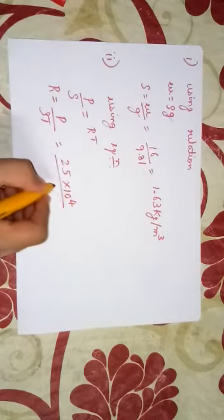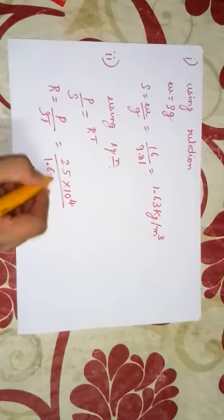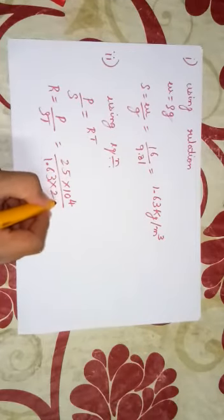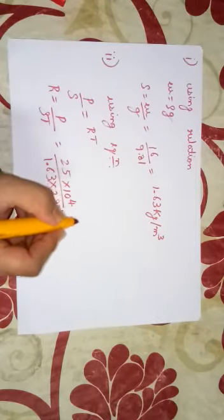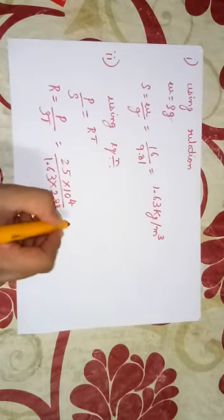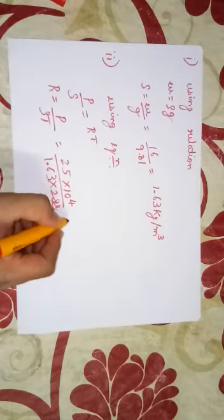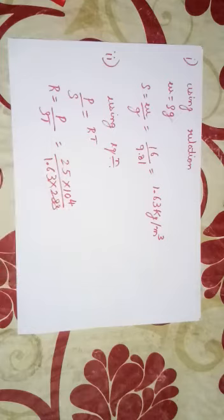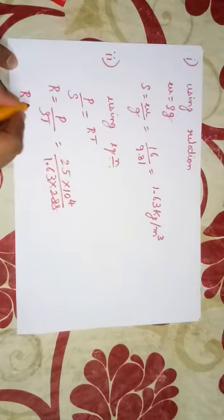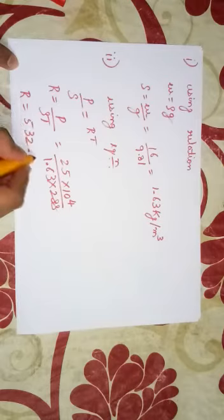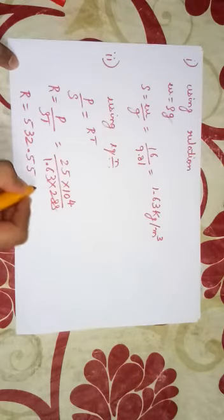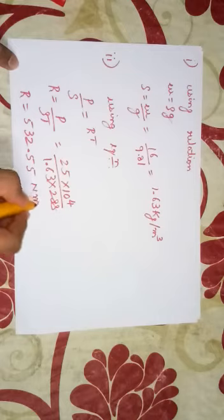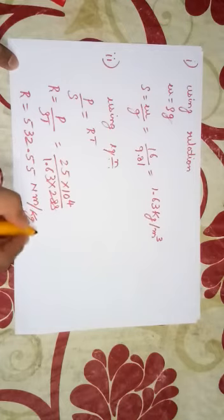divided by 1.63 into 288, and this will be equal to 532.55 newton meter per kg Kelvin.